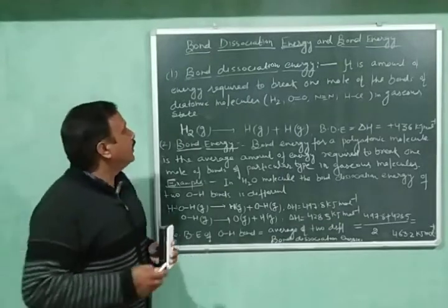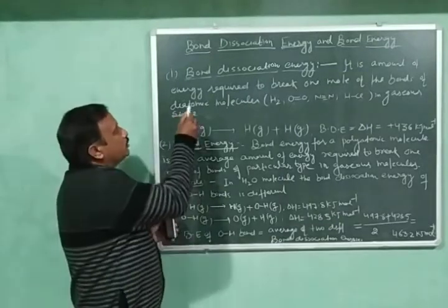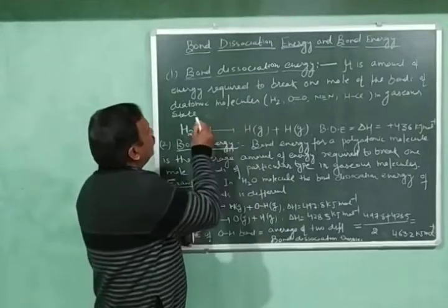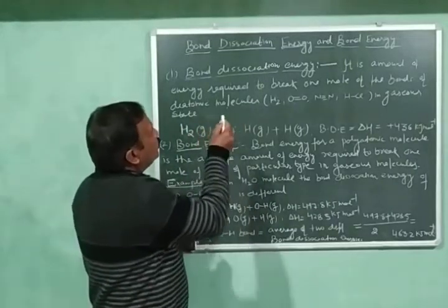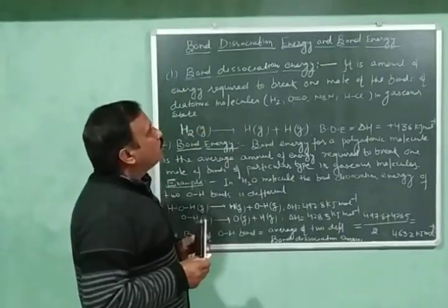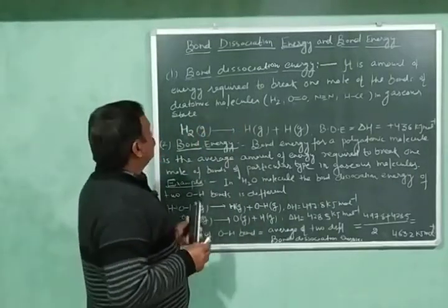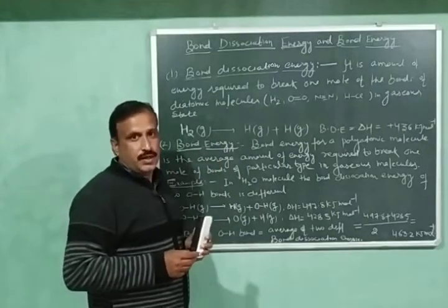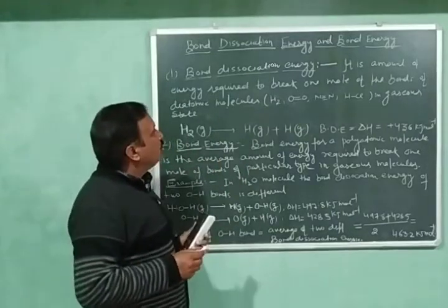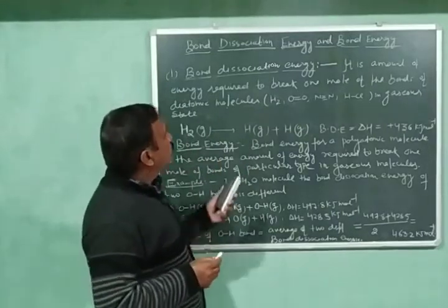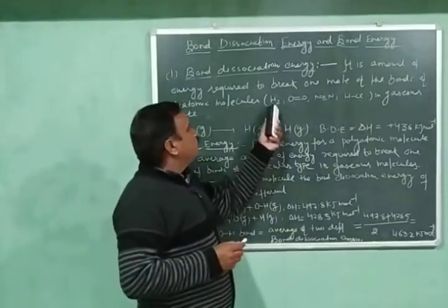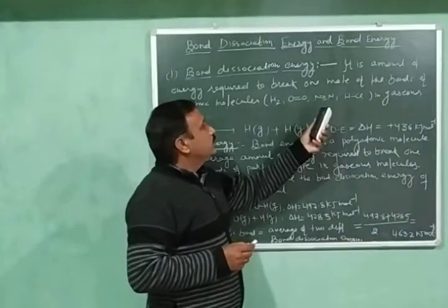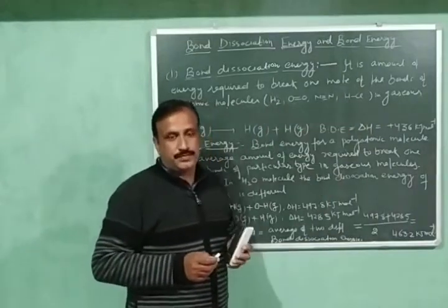Let us define bond dissociation energy. It is the amount of energy required to break one mole of the bonds of diatomic molecules in the gaseous state. Examples of diatomic molecules are H2, O2, N2, and hydrochloric acid (HCl).